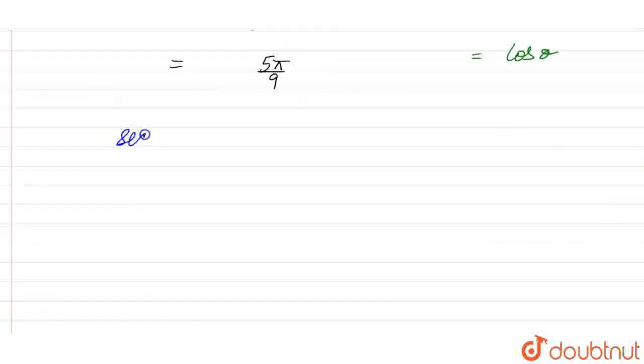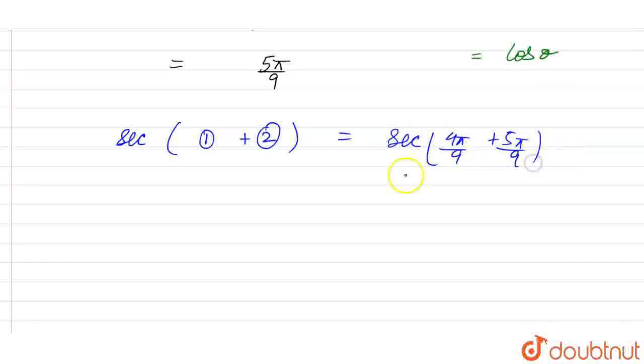Now we have to find sec of 1 plus 2. That is sec of 4 pi by 9 plus 5 pi by 9. This is equal to sec of pi. We have sec pi is minus 1. So, the final value will be minus 1. Thank you.